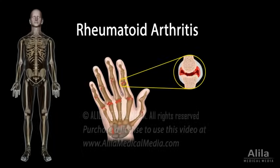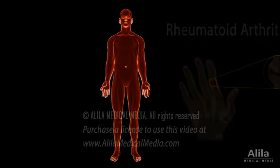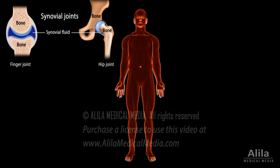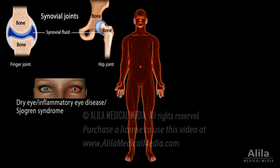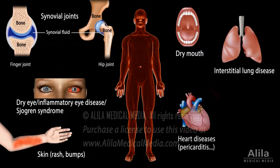While the term rheumatoid arthritis means inflammatory disease of the joints, the condition is in fact a systemic autoimmune disorder where the immune system mistakenly attacks the body's own tissues in various organs. In addition to synovial joints, the disease may affect the eyes, skin, mouth, lungs, heart, and blood vessels.